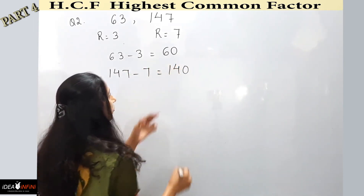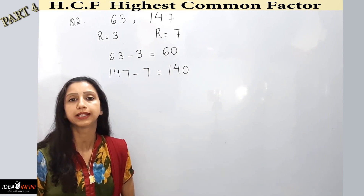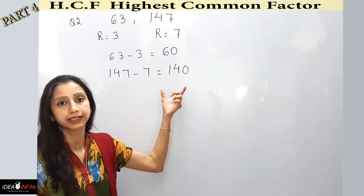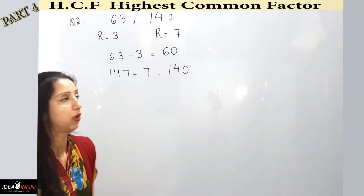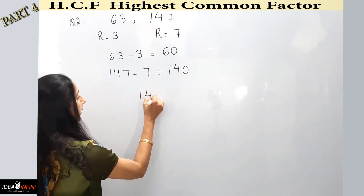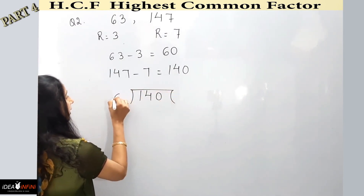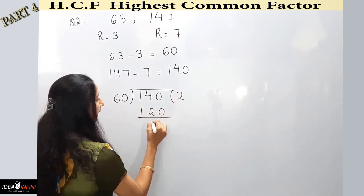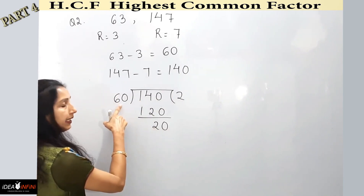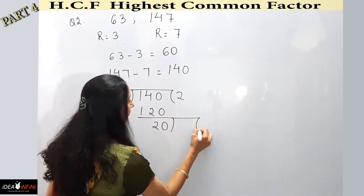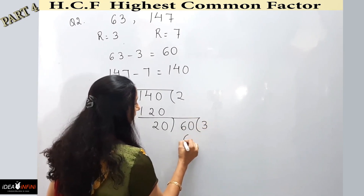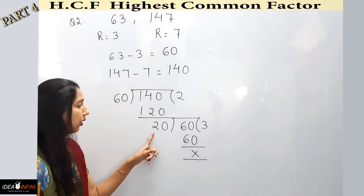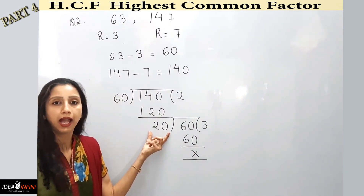63 minus 3 gives 60, and 147 minus 7 gives 140. These two numbers are perfectly divisible by the same number — the HCF we want. Using long division: 140 is the bigger number so it goes inside, with 60 as divisor. 60 twos are 120, remainder 20. That 20 becomes the new dividend: 20 threes are 60, remainder 0.